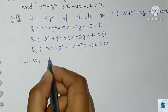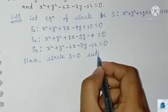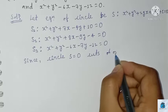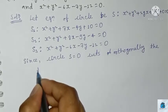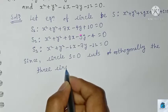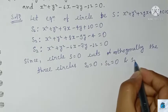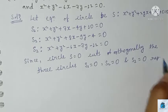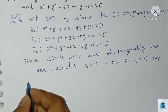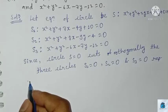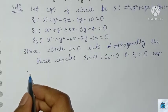Since circle S = 0 cuts orthogonally the three circles S1 = 0, S2 = 0, and S3 = 0 respectively, we use the condition for two circles to cut orthogonally: 2g·g1 + 2f·f1 = c + c1.